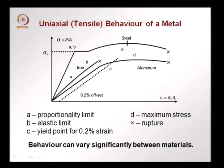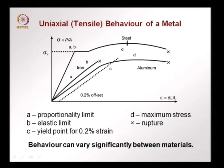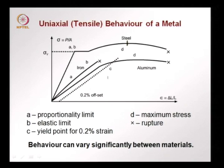In the case of aluminium, there is no definite point where we can identify where yielding starts or where proportionality ends. In order to define a yield point objectively for materials that do not have a clear well-defined yield point like mild steel, a 0.2% offset is taken. A line is drawn parallel to the initial slope at a strain of 0.2%, and wherever it intersects is taken as the yield point. This is classical of polycrystalline materials which have different grains yielding at different points in time.